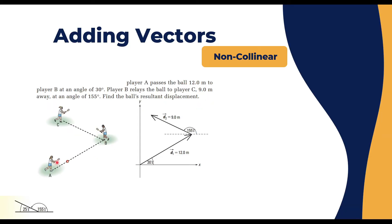Let's look at an example. Player A passes the ball to player B; the ball travels 12 meters at an angle of 30 degrees. We draw this on a Cartesian coordinate system with x and y axes. The first vector goes from the origin at an angle of 30 degrees to player B, so d1 equals 12 meters.